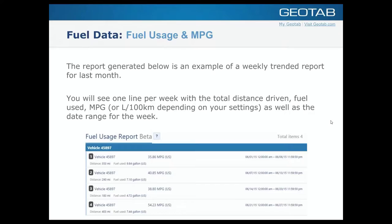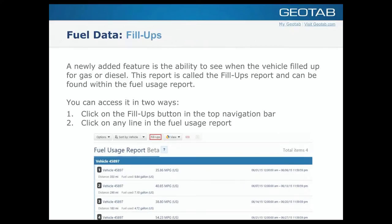Going back to the slide deck: you'd see one line per week showing total distance driven, fuel used, MPG or liters per 100 kilometers, and the date range for the week. One great new feature — still technically in beta but released in the software — is what we call the Fill-Ups report. Our engineers have figured out a way to determine when a vehicle has filled up with gas, diesel, or fuel. You can access it from the fuel usage screen by clicking the Fill-Ups button in the navigation bar, or by clicking any line to see fill-ups for that particular time period.